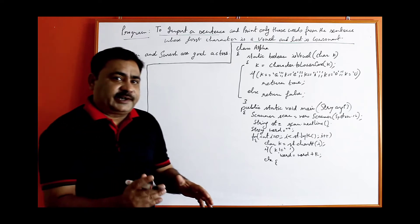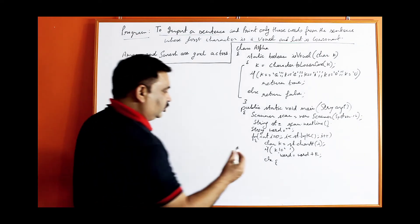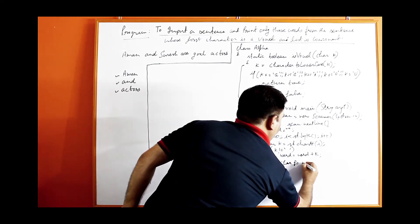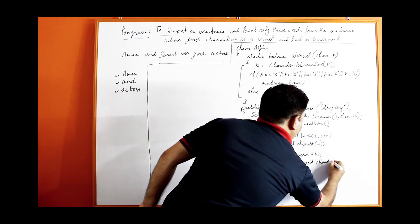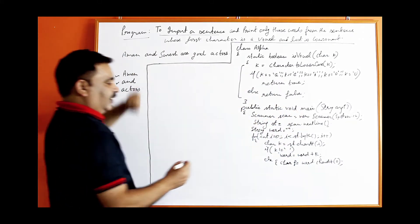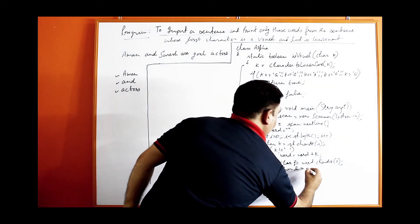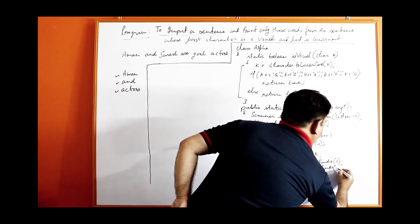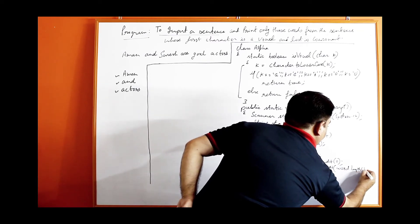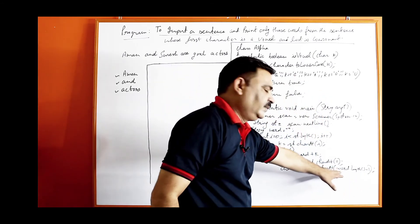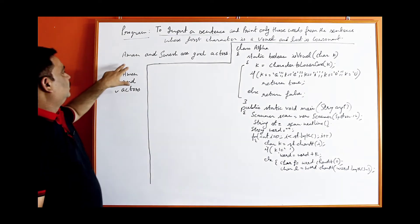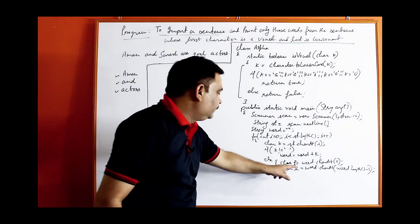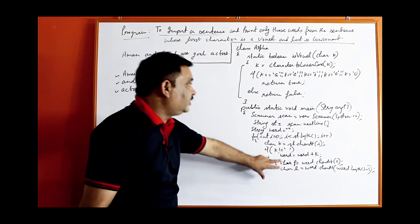From this word, you have to extract the first character and the last character and store them in two variables. char F equals word dot charAt(0), and char L equals word dot charAt(word dot length minus 1). To extract the last character, use length minus one — because if the word is 'Aman', length is 4, so 4 minus 1 is 3, which is the index of the last character.